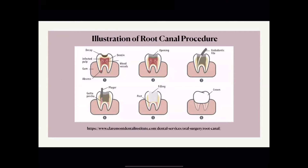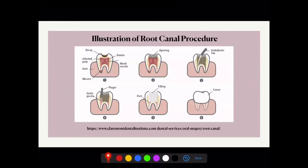This image lays out the root canal procedure. Step one is the initial infected tooth. Step two shows the opening drilled through the top of the tooth. Step three shows the shaping of the canals using endodontic files, which removes the infected pulp. After the pulp is removed, an irrigant is flushed into the canal to kill any leftover bacteria. Step four shows the gutta-percha being placed into the canal, while steps five and six are normally done afterward by a general dentist.